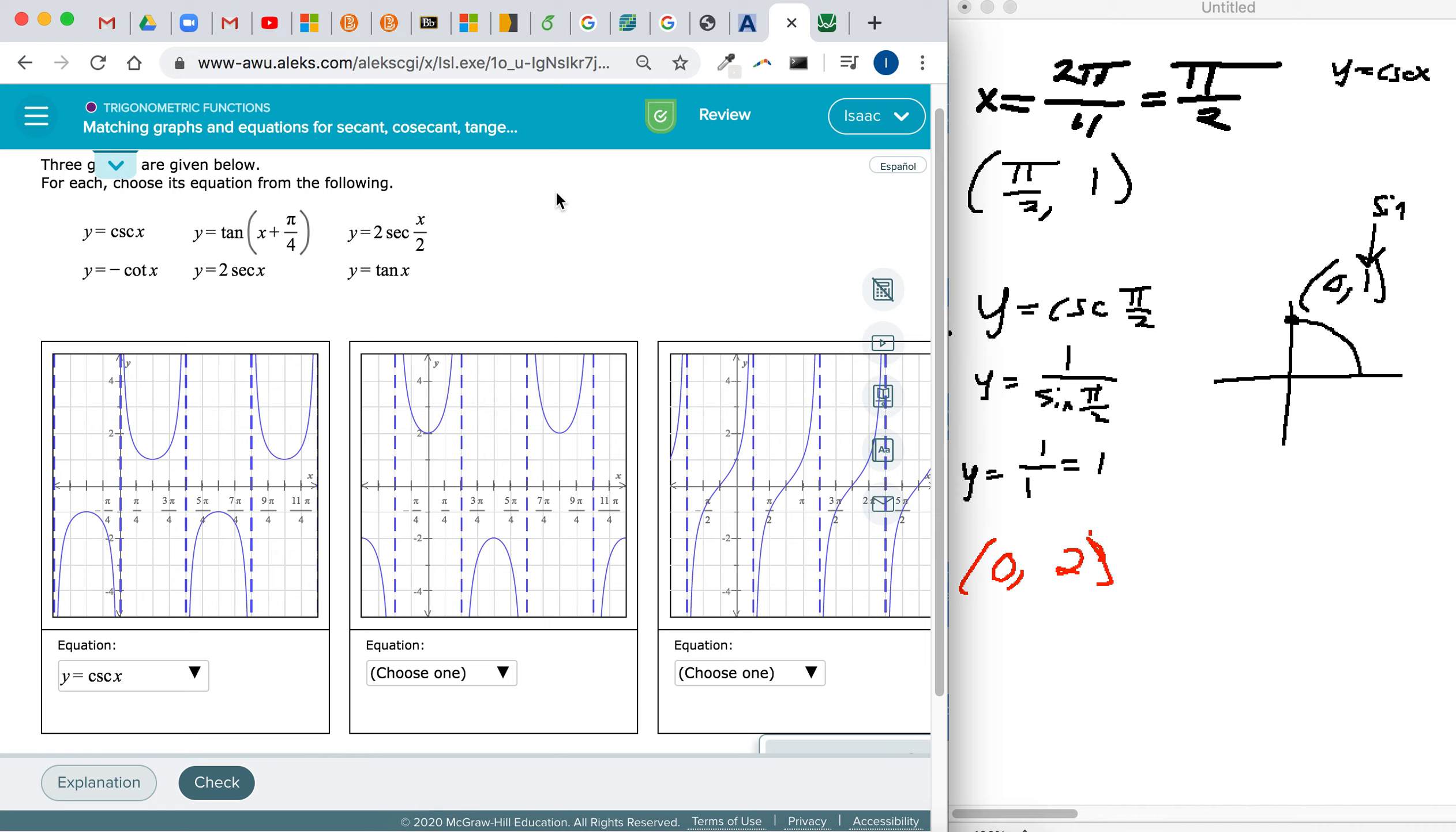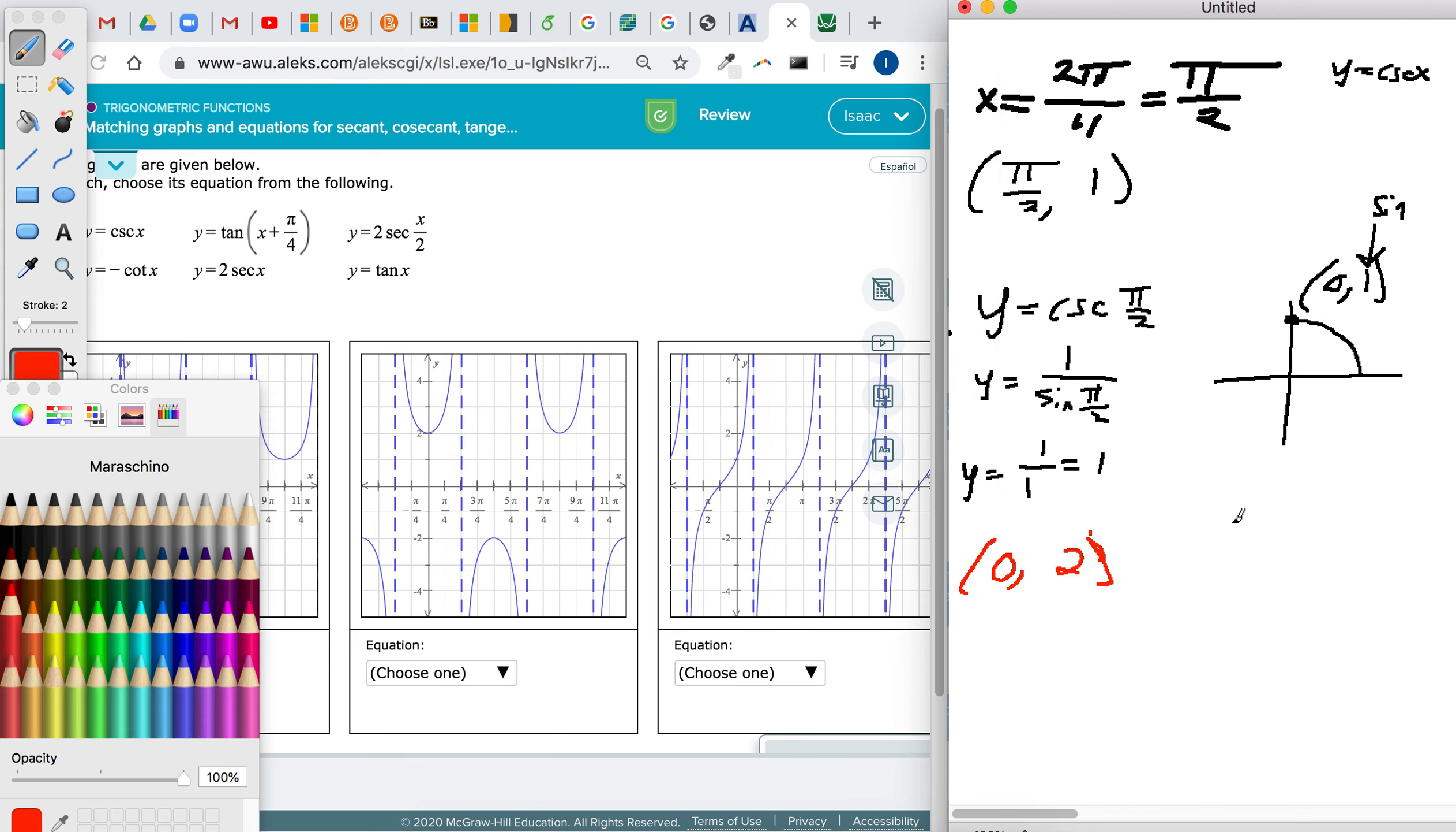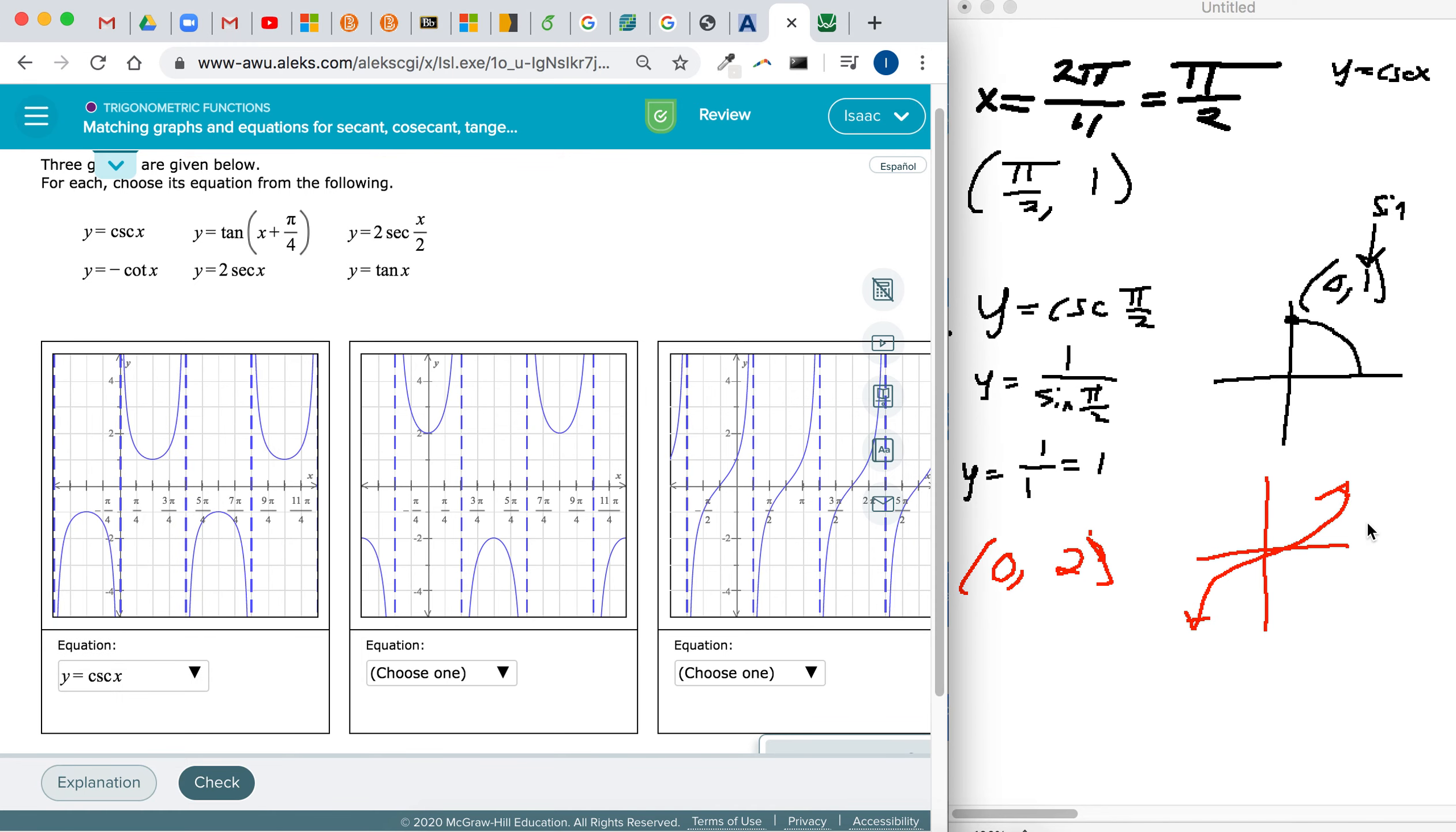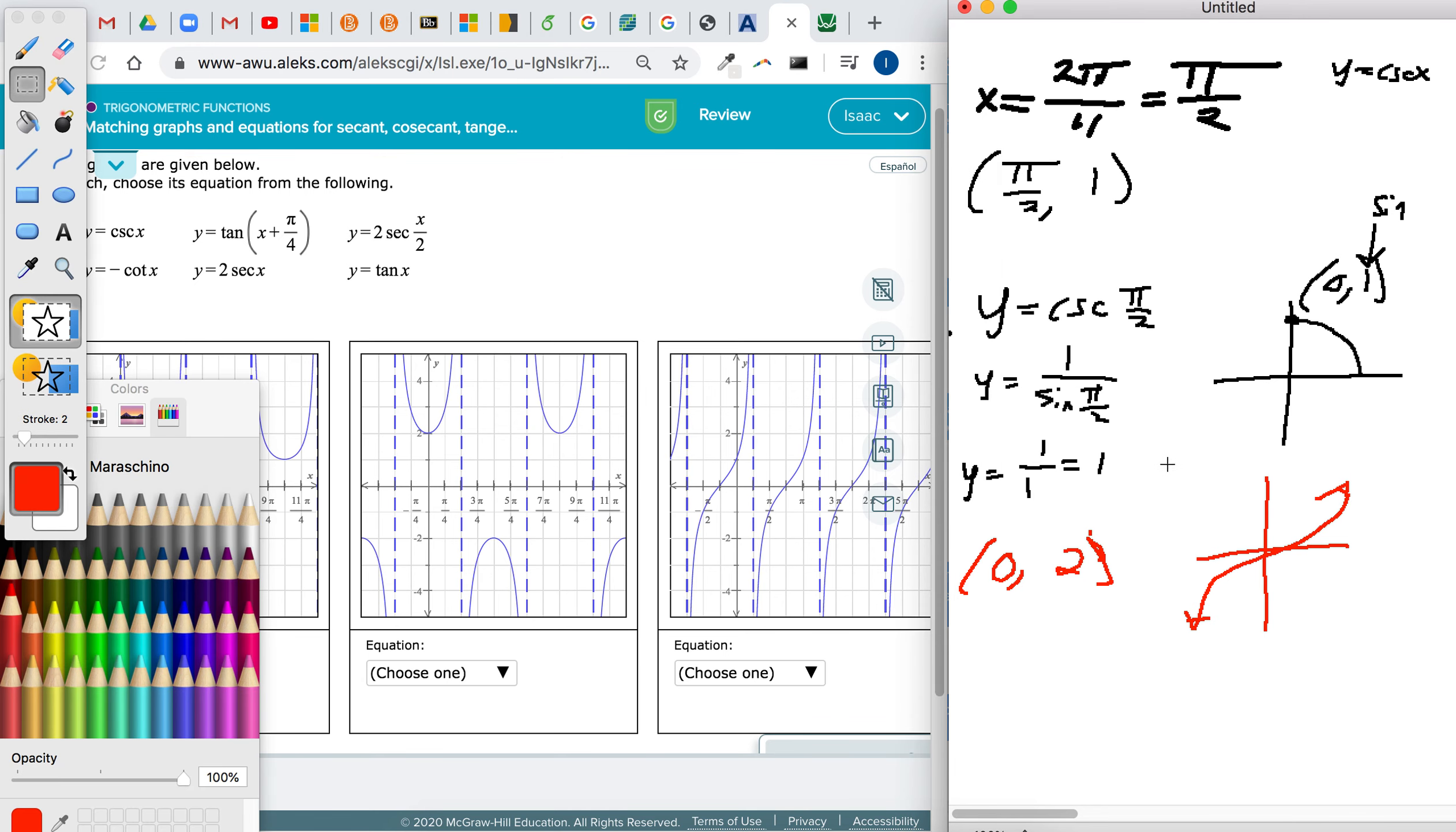So let's see which graph might make that happen. We already ruled out cosecant x. We could try plugging in 0 in for tangent, but one way to rule tangent out is the graph of tangent should look something like this. It doesn't make these u's and upside-down u-shapes like we're seeing over here. So we can save ourselves some time realizing it's not tangent.